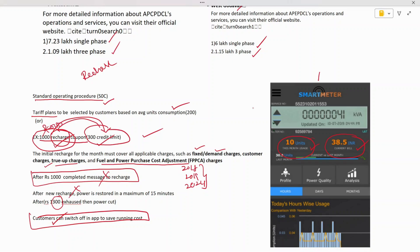This recharge gives a reserve fund of 300 rupees. For example, if you recharge for 1000 rupees, you get a reserve fund of 300 rupees as credit limit. If you recharge for 2000, you'll get 600 rupees credit limit. This credit limit is like a reserve fund.